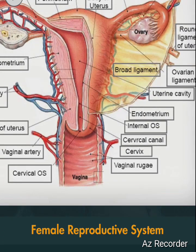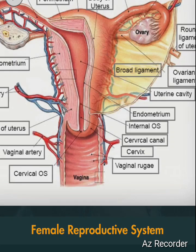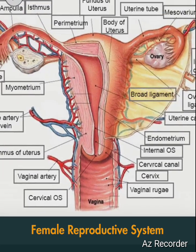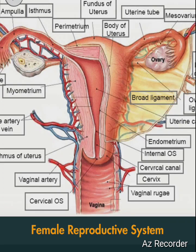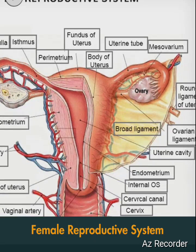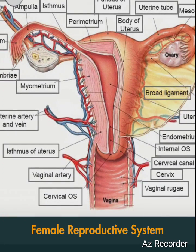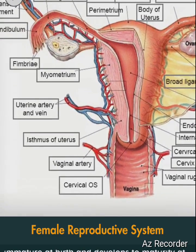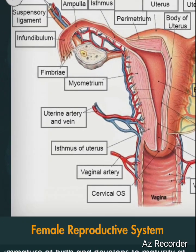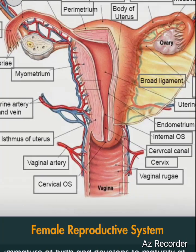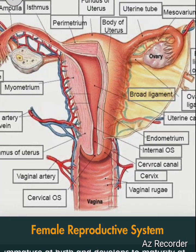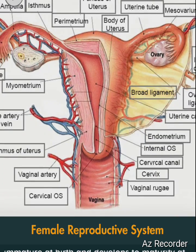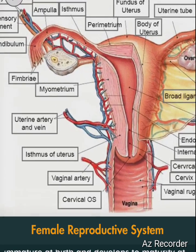The internal sex organs are the uterus, fallopian tubes, and ovaries. The uterus, or womb, accommodates the embryo which develops into the fetus. The uterus also produces vaginal and uterine secretions which help the transit of sperm to the fallopian tubes.